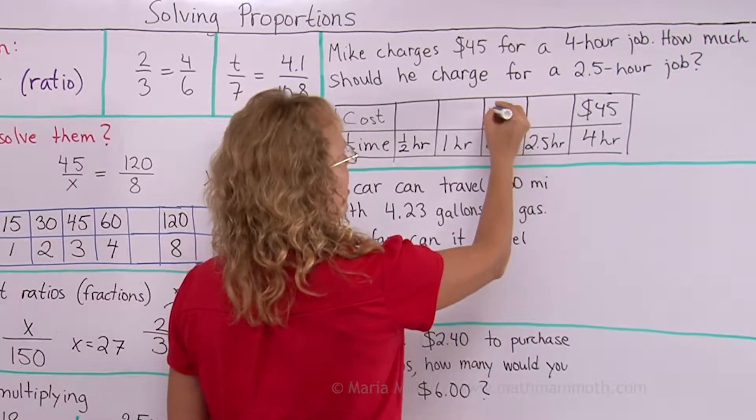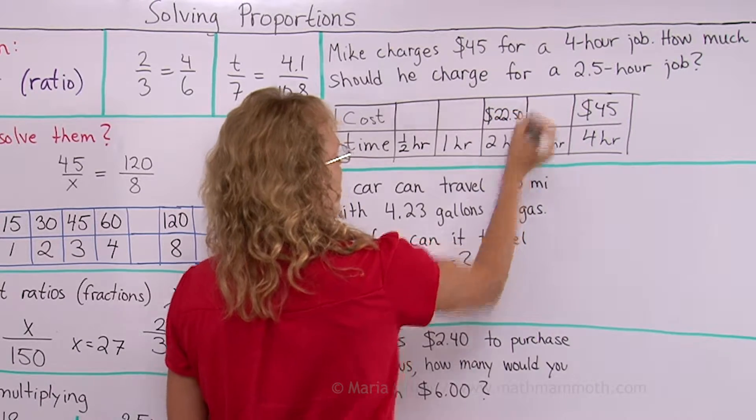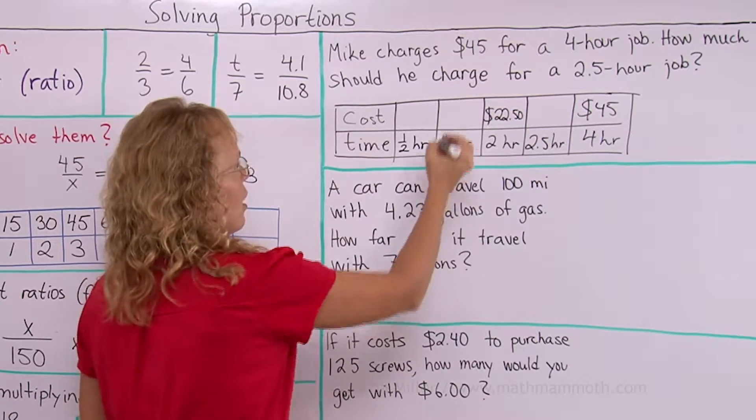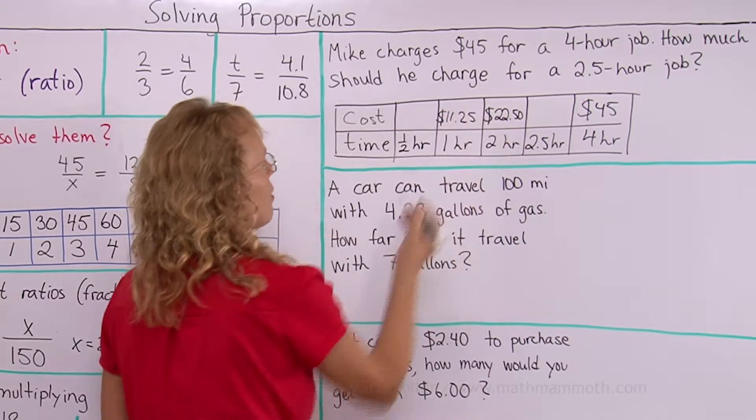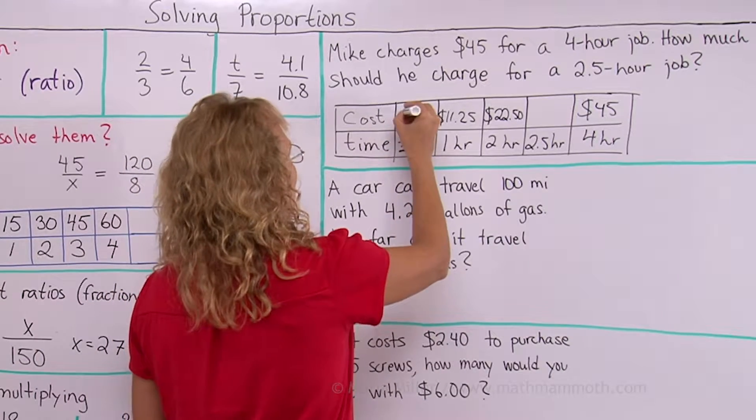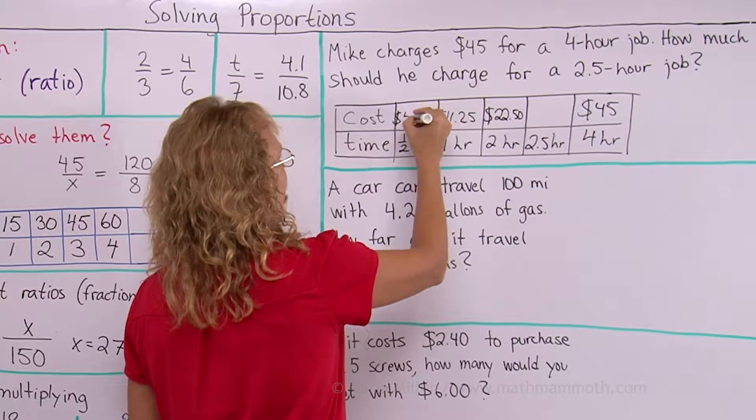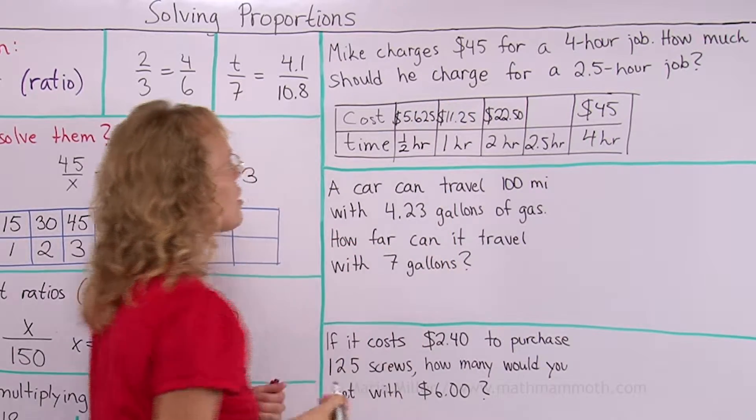So for two hours it would be half of that. It would be $22.50. For one hour would be half of that which is $11.25. And then for half an hour it would be half of that which would be five dollars and sixty-two. Actually five dollars sixty-five.